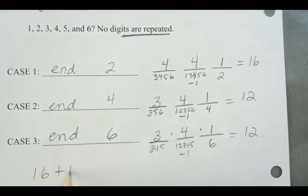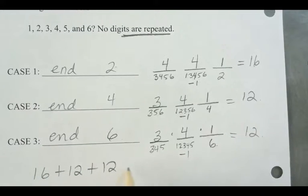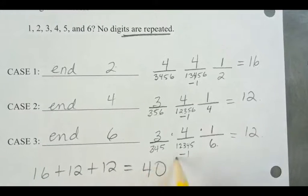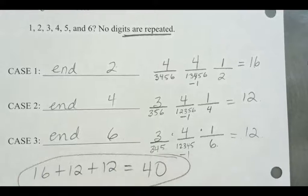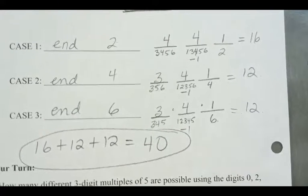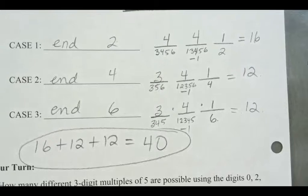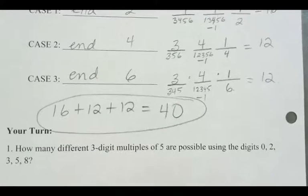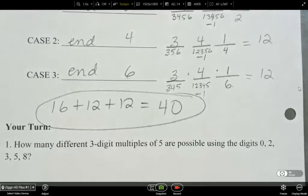And then I'm going to add up all of those to get the total number of possibilities. Alright. So that equals 40. Okay, so do these your turn questions, and we'll have a look at them tomorrow.